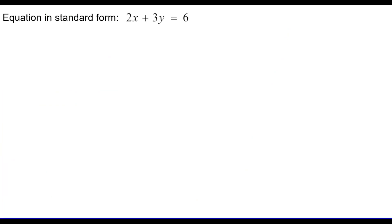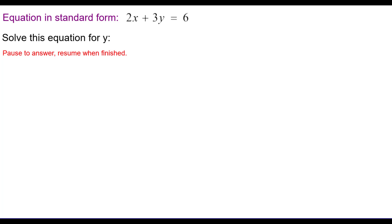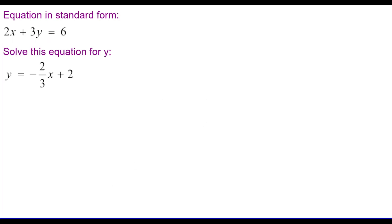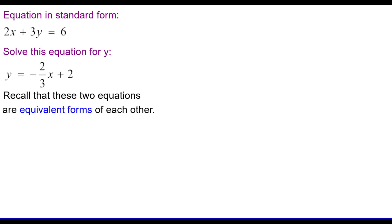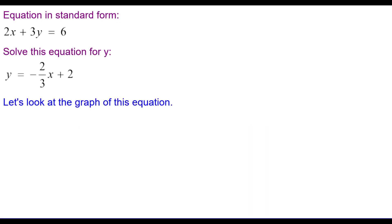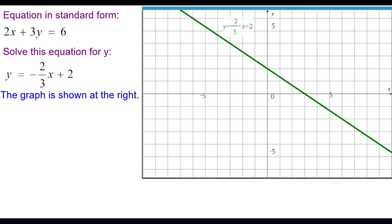Solve this equation for y in terms of x. I subtracted 2x from both sides, then divided each term by 3. When simplified, I got y equals negative 2 thirds x plus positive 2. So here are our two equations — again, these are equivalent forms of each other. They look different but describe the same set of points. Let's look at the graph of this equation.